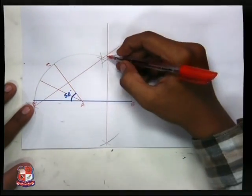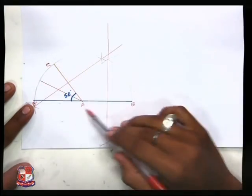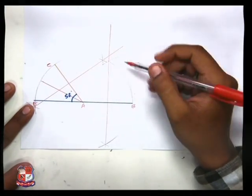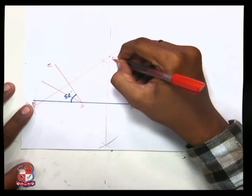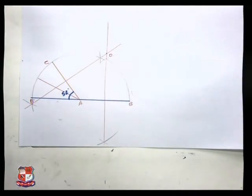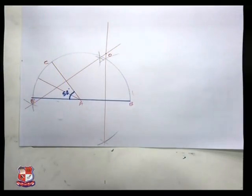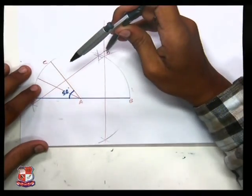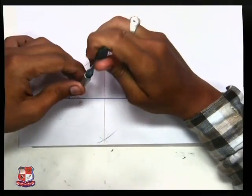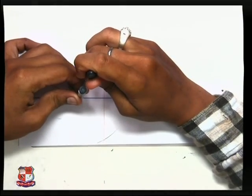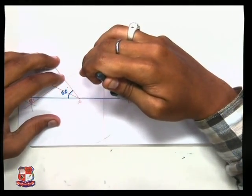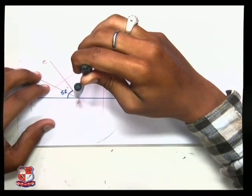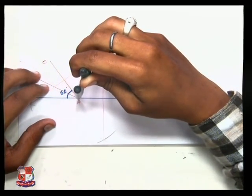The point where bisector of AB and AC intersects is called point O. Take O. Next step, take O as radius, take O as center.